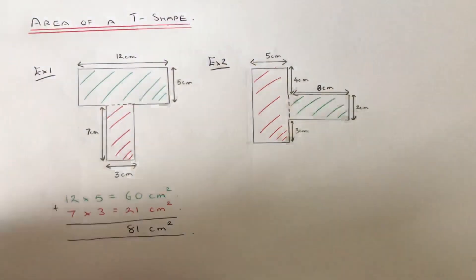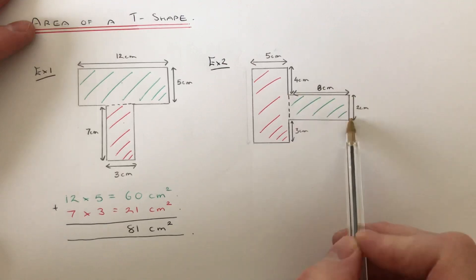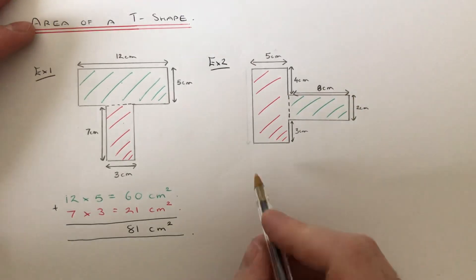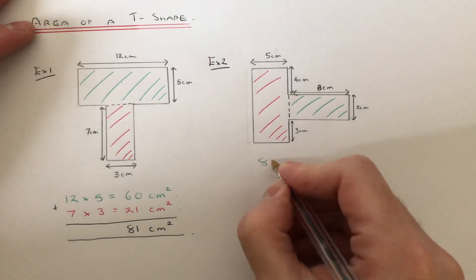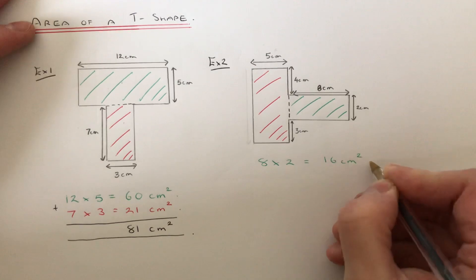So let's start with the green rectangle first because we have the length and the width of the green rectangle. So again we just need to multiply the 8 and the 2 together. So 8 times 2 is 16cm squared.